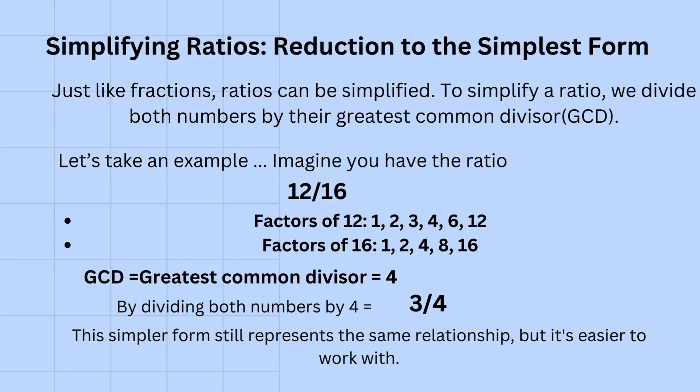To simplify a ratio to a fraction, first write the ratio as a fraction. Then divide both the numerator and the denominator by their greatest common divisor.